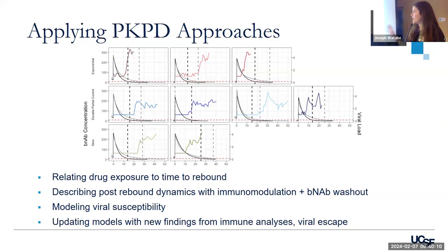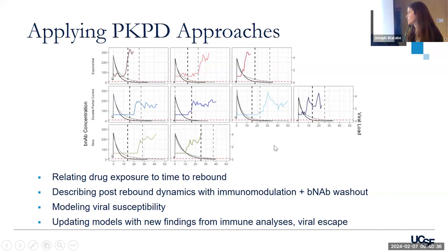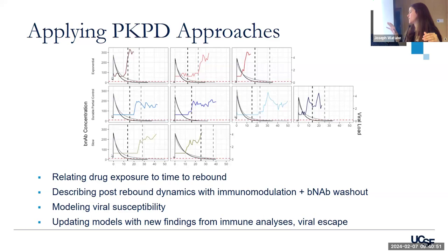The first area is applying PKPD approaches. This is something you may have seen Michael and Rachel present before — looking at a clinical trial, the AMFAR study, thinking about viral rebound over time following ATI. These are the BNAB plasma levels — understanding how the BNAB exposure relates to time to rebound, and also how post-rebound dynamics, the BNAB washout for individuals that still have BNAB on board, relates to the immune modulation that is occurring, and how viral susceptibility comes into that too. This is classical PKPD analysis using non-linear mixed effects modeling. My postdoc Hari is spearheading this work.